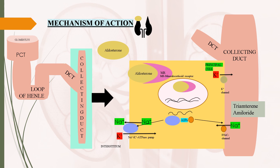Coming to the mechanism of action, these drugs act in the late distal convoluted tubule (DCT) and the collecting duct. Before going to the mechanism of action of potassium-sparing diuretics, let us see the normal physiology happening in this region. On the luminal membrane of principal cells, there are epithelial sodium channels that transport sodium ions from the lumen of the collecting duct into the principal cells. These sodium ions are further transported to the interstitium through the sodium-potassium ATPase pump present on the basolateral membrane of principal cells.